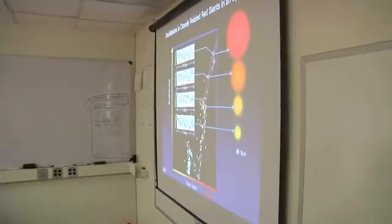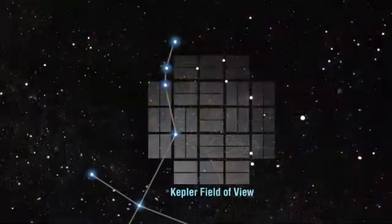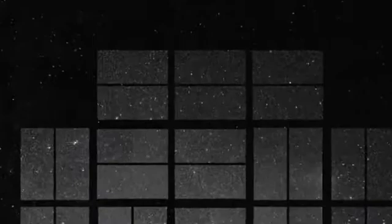Not only is the Kepler team finding individual planetary candidates, they are also discovering some of their first multi-planet systems as well. They have detected 86 potential planetary systems that may have two or more planets.